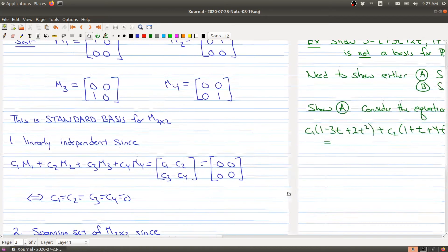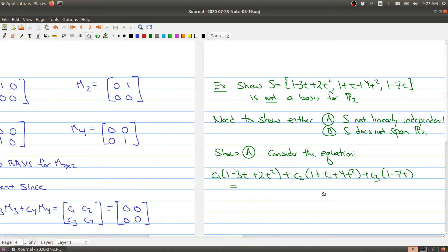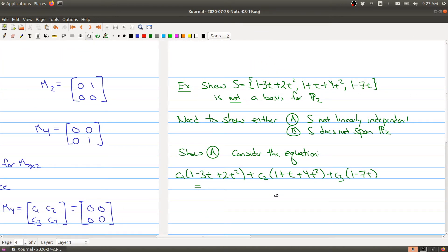And as I was mentioning last time, that sometimes it's actually helpful to see things that do not have the property. So let me give you an example where we show something is not a basis. So here I have a set of vectors. And in this case, because I'm working in P2, my vectors are all polynomials.